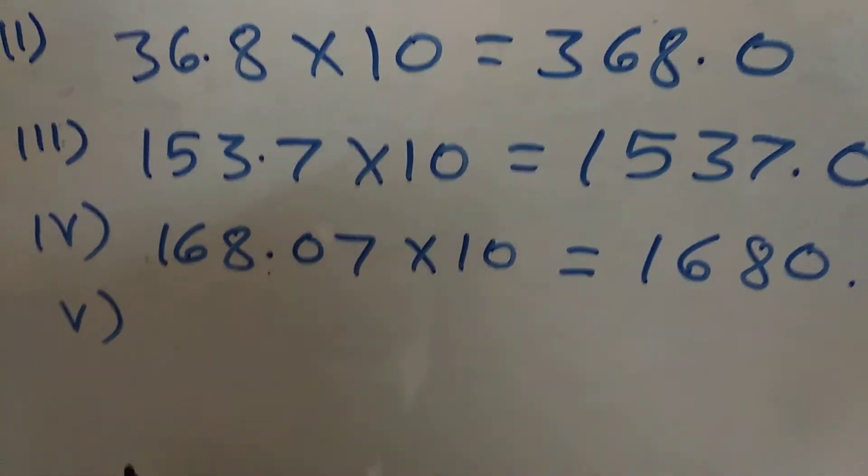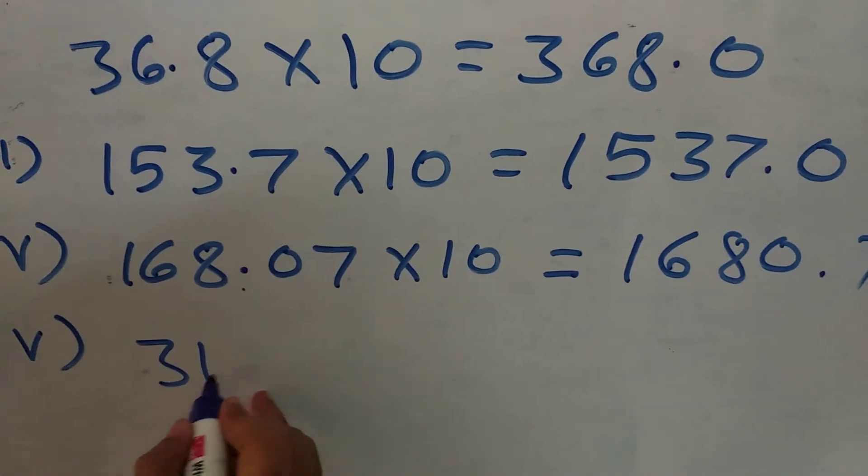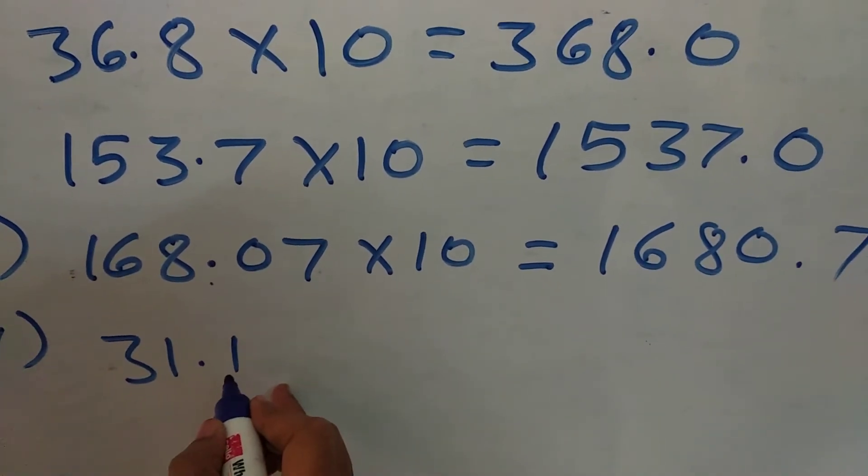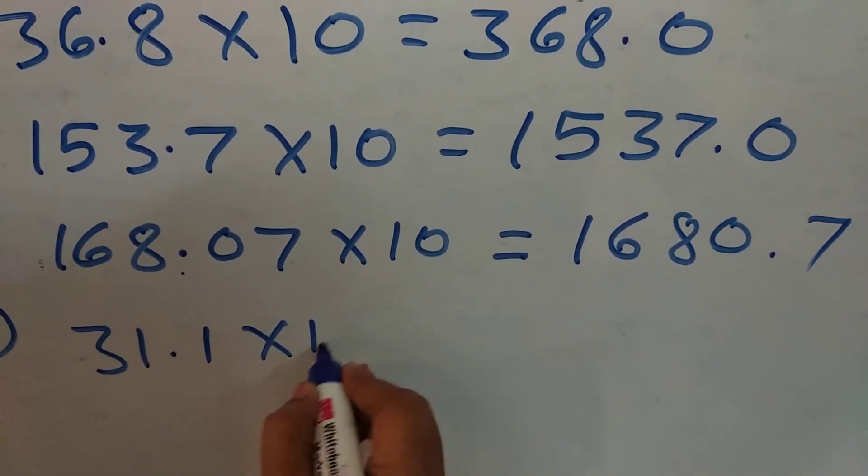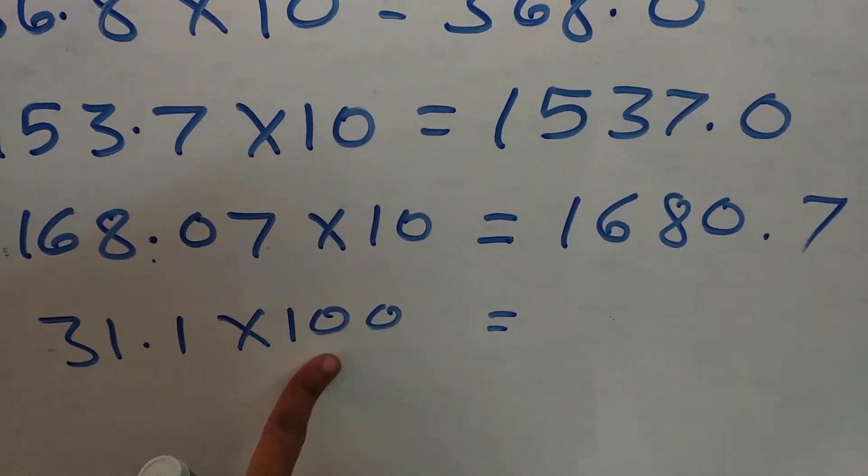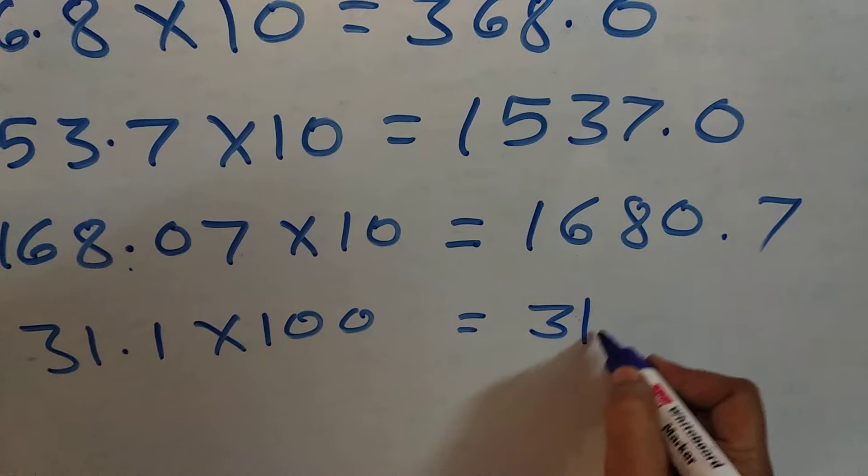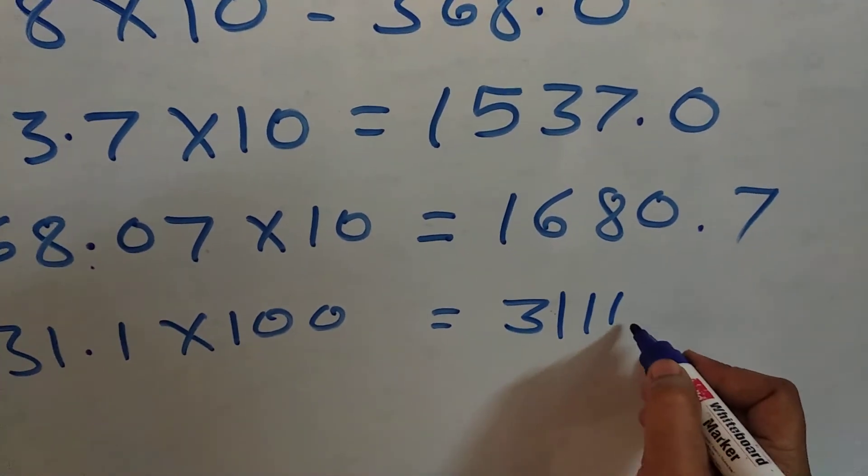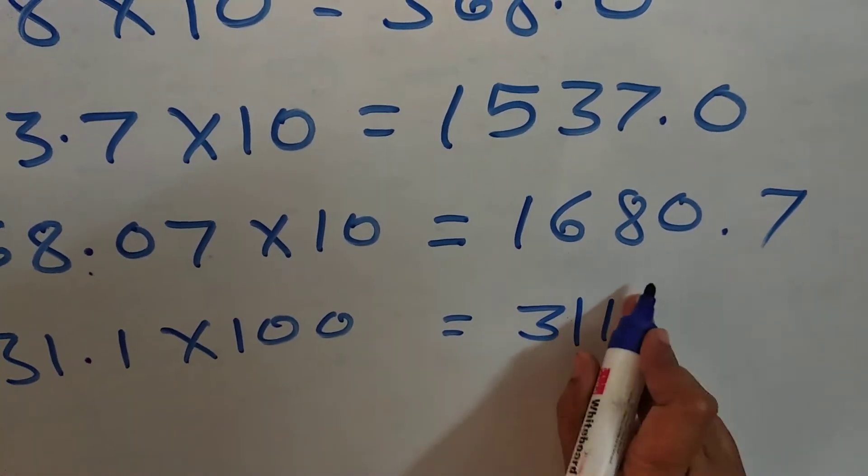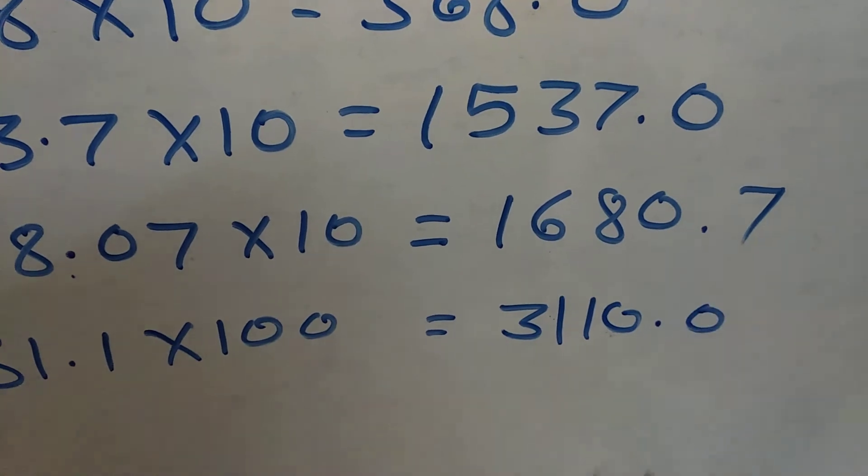Now, fifth one, 31.1 multiplied by 100. Students here, multiply by 100 means two digits we have to shift that side. So, here, 3110.0 here.